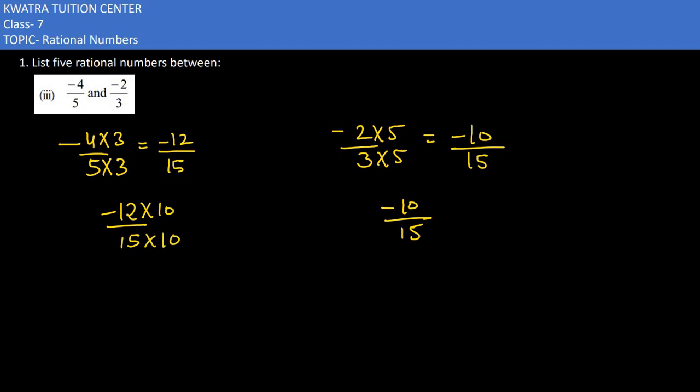Now we multiply 10 and divide 10 so that we have five rational numbers in between. So I would get minus 120 over 150 and on the other hand I would get minus 100 by 150.